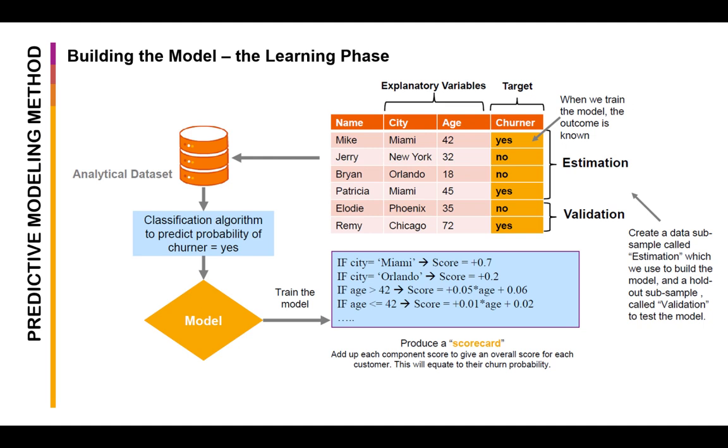Now we split that dataset into estimation and validation datasets, which could help us build a robust model. This dataset is now used against a classification algorithm to predict the probability of churn based on the explanatory variables included.